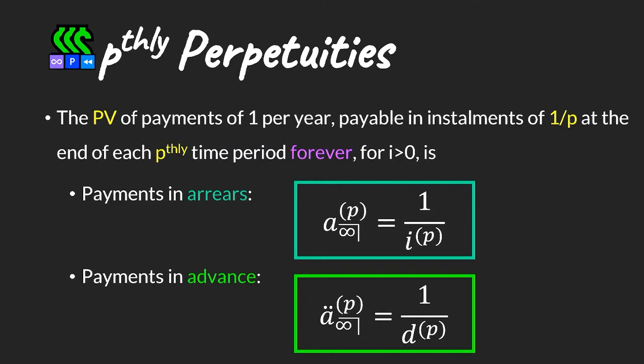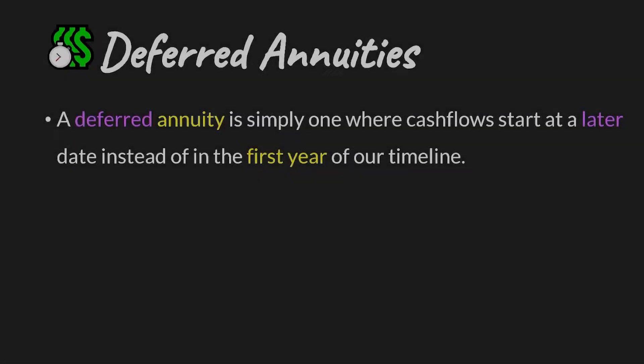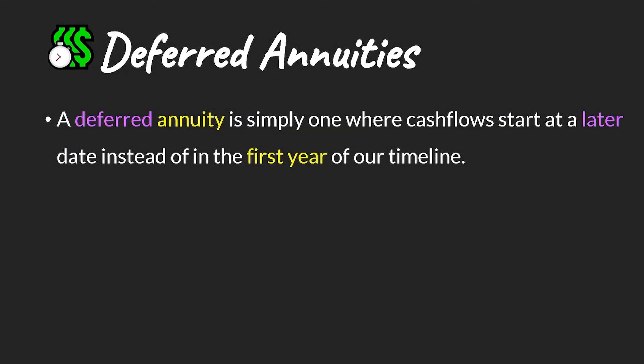More formally, we can write the equation and notation for the present value of payments paid pthly forever — for both payments made in arrears and payments made in advance.